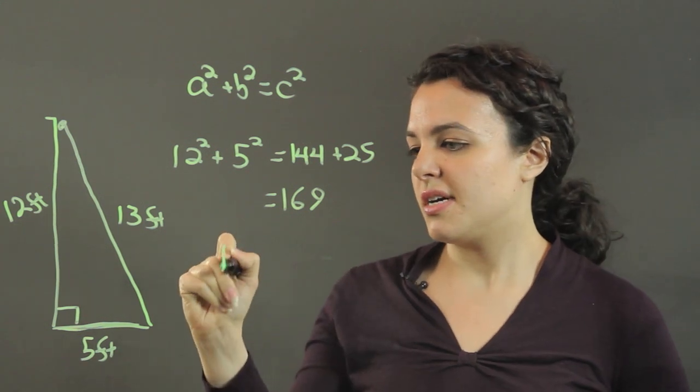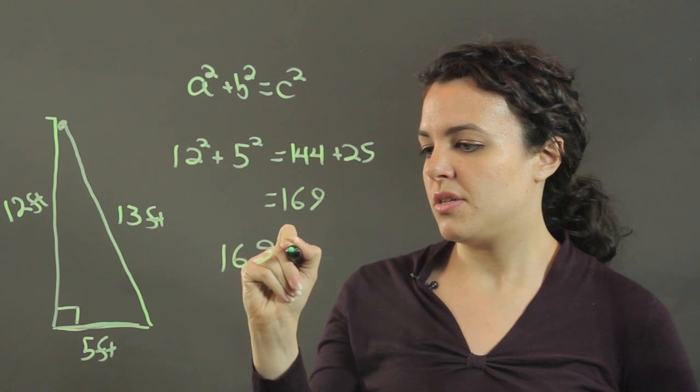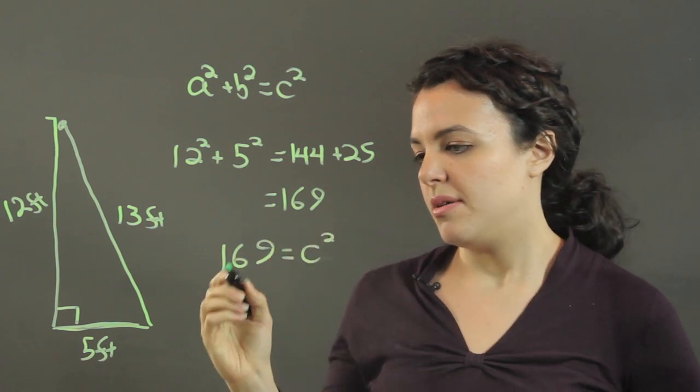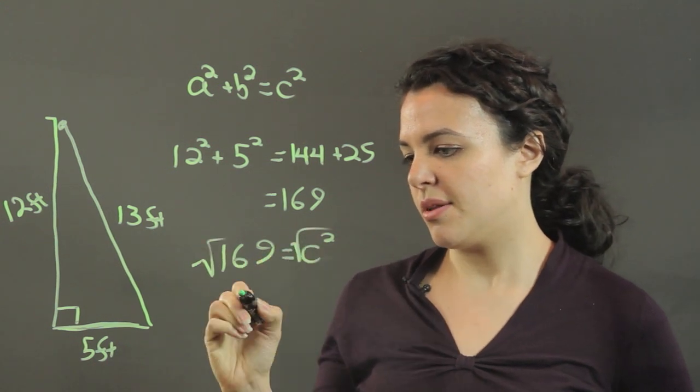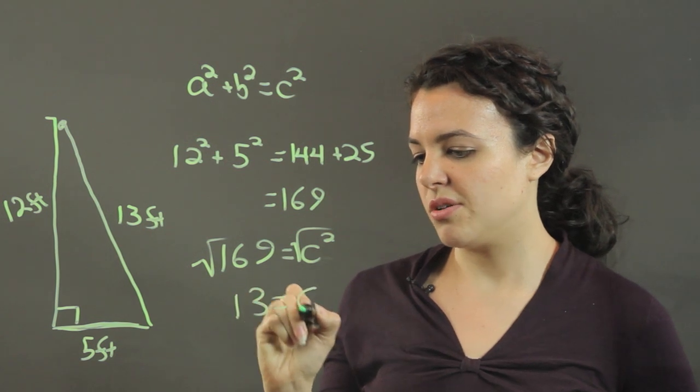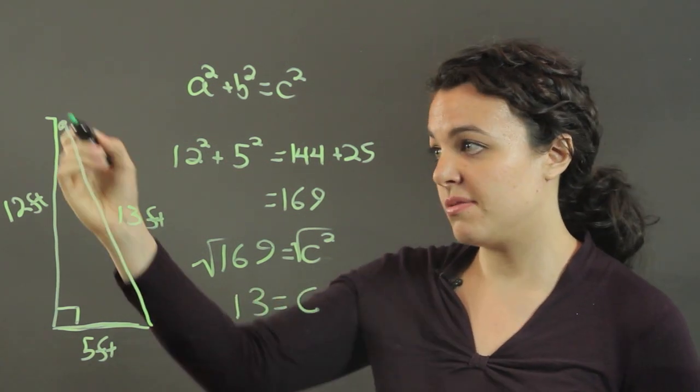And so, 169 is c squared, meaning we take the square root of both sides. This means that 13 is the value of c. That would be the hypotenuse of this triangle.